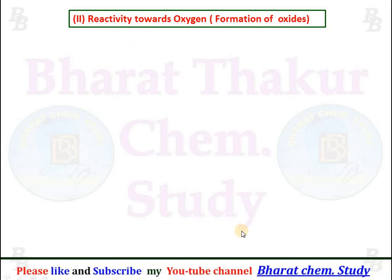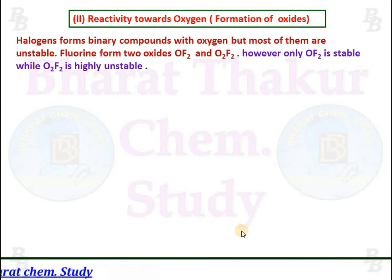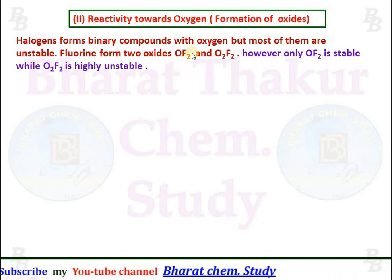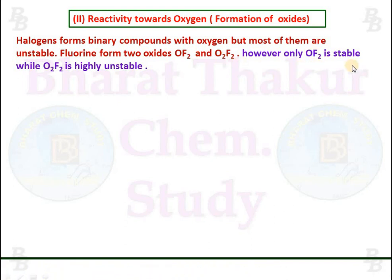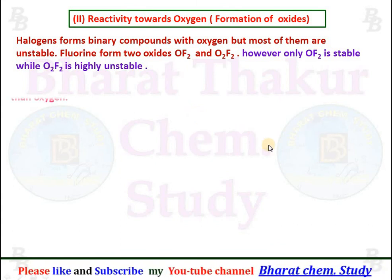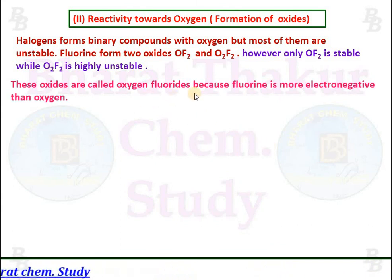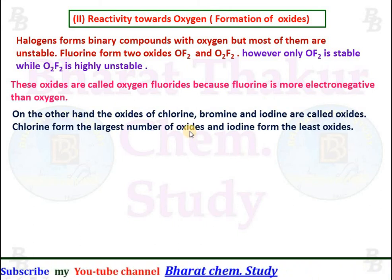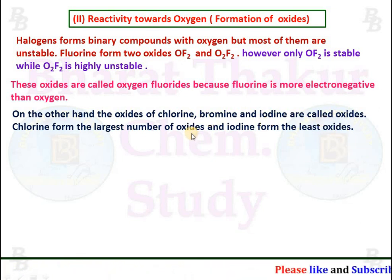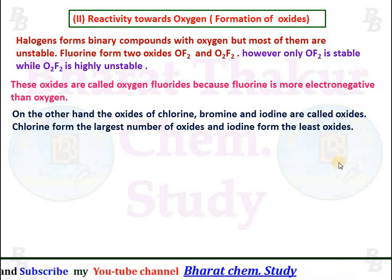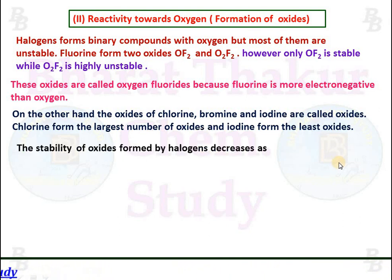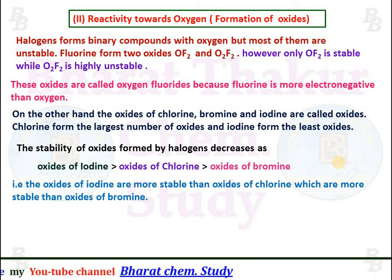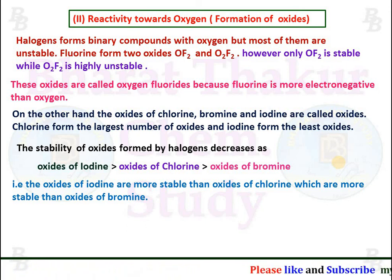Reactivity towards oxygen and formation of oxides: halogens form binary compounds with oxygen, but most of them are unstable. Fluorine forms two oxides, OF₂ and O₂F₂; however, only OF₂ is stable while O₂F₂ is highly unstable. These are called oxygen fluorides because fluorine is more electronegative than oxygen. The oxides of chlorine, bromine, and iodine are called halogen oxides. Chlorine forms the largest number of oxides and iodine forms the least. The stability of oxides increases as: oxides of iodine are more stable than those of chlorine, which are more stable than those of bromine.